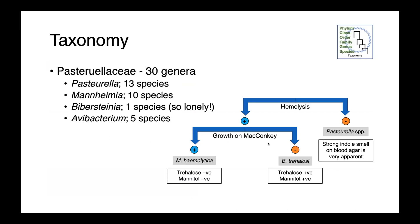Within the family Pasteurellaceae, we have 30 different genera. Pasteurella is one of those, including 13 species. We have 10 species of Mannheimia, only one of Bibersteinia — so just Bibersteinia trehalosi — and then Avibacterium has five species.